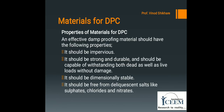Next point is materials for damp proof course. Properties of material for damp proof course are: it should be impervious, meaning moisture does not pass through it; it should be strong and durable and capable of withstanding both dead as well as live loads without damage; it should be dimensionally stable — it does not change dimensions when any kind of load is applied; and it should be free from deliquescent salts like sulfates, fluorides, and nitrates.